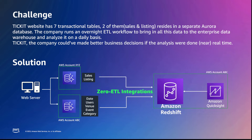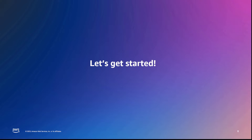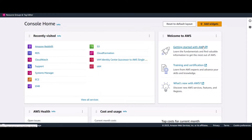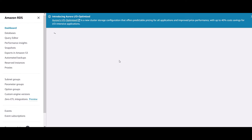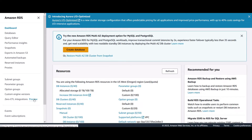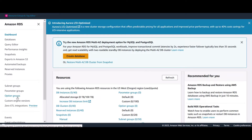The Ticket leadership team would like to do this in near real time for better and quicker decision making. The solution is creating multiple Zero ETL integrations to bring data from Aurora MySQL databases in both account ABC and XYZ to an Amazon Redshift destination in account ABC. Login to AWS Management Console — Amazon Redshift will have our destination and Amazon RDS will have our source Aurora MySQL database.